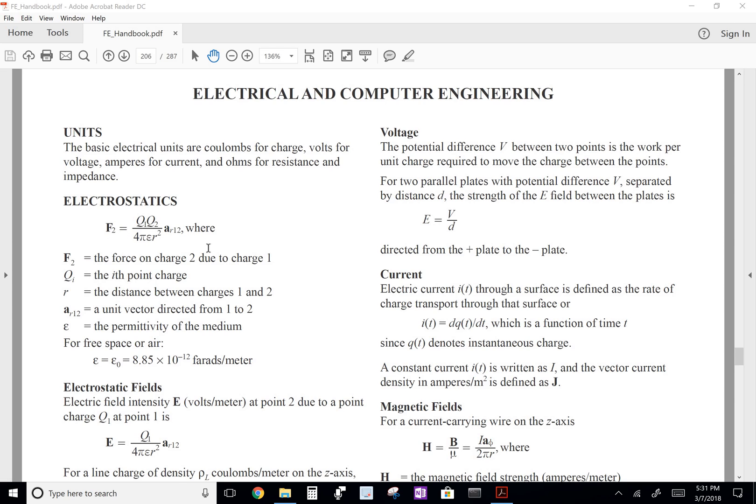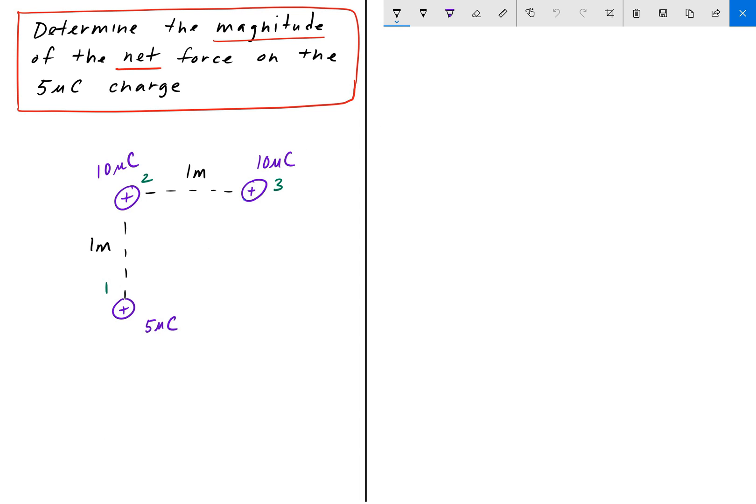And that will give us the force on charge two due to charge one. So I'm going to write that on the next page. The general formula is that force is equal to Q1 times Q2 divided by 4 pi epsilon naught R squared. And sometimes you'll see that rewritten as K Q1 Q2 divided by R squared,